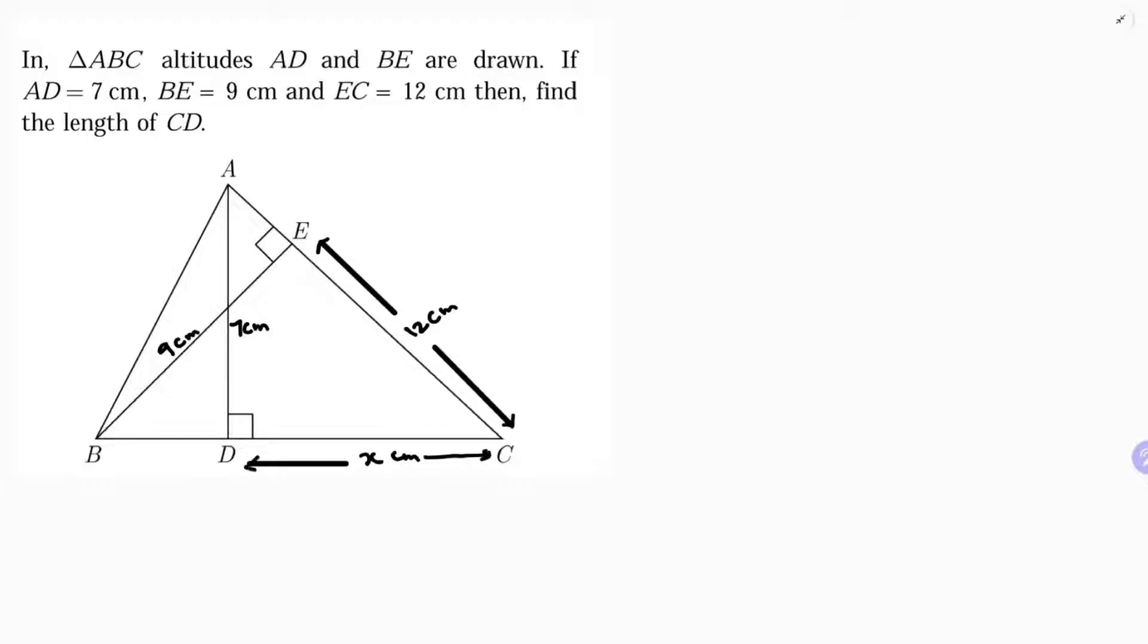To find CD, I'll take two triangles: triangle BEC, because I have the length of EC, and triangle ADC. Both have 90-degree angles, so I'll take triangle BEC and triangle ADC.